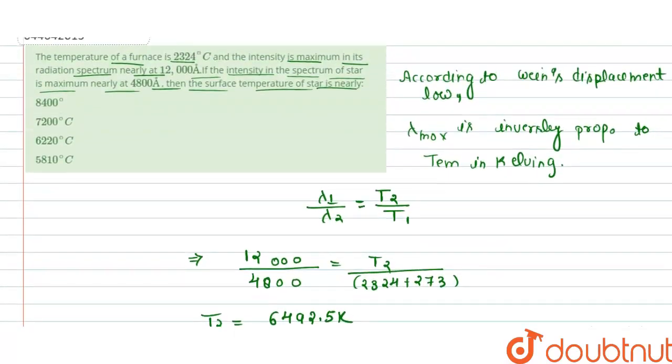We add 273 because this value of 2324 is in centigrade, and we convert this value to Kelvin. That is the reason we use this 273 in adding this value.